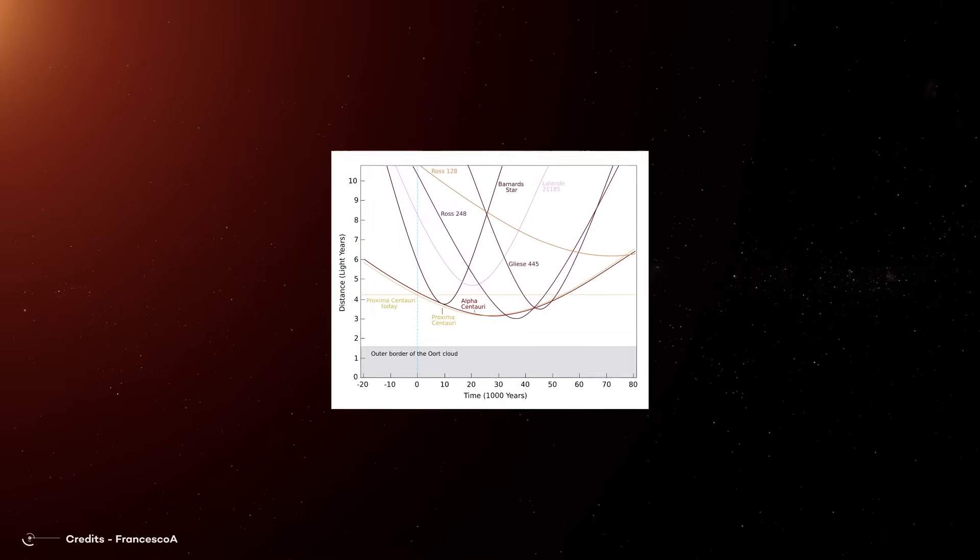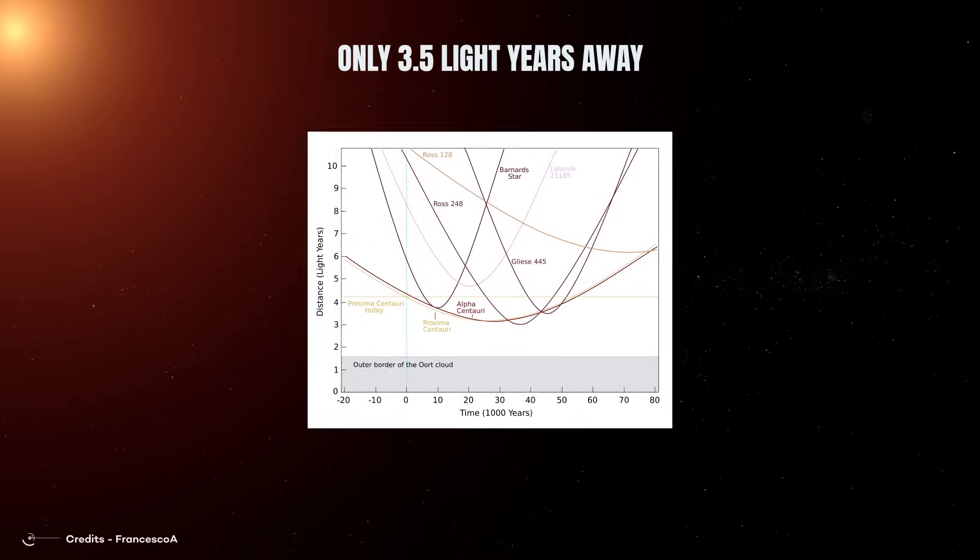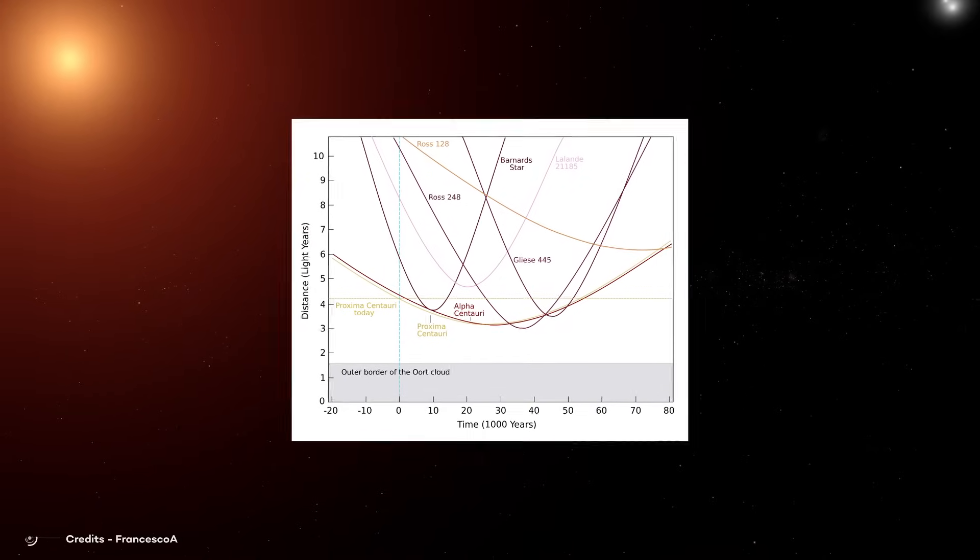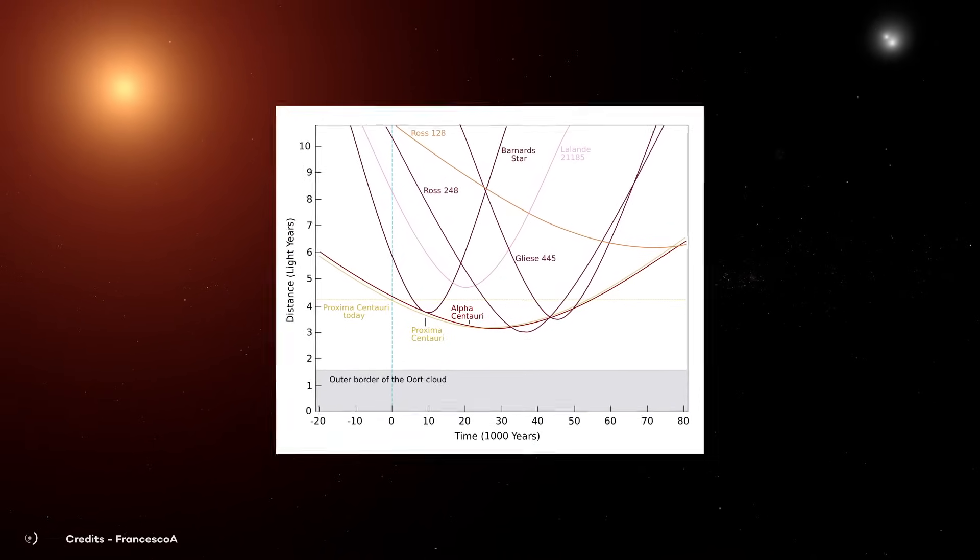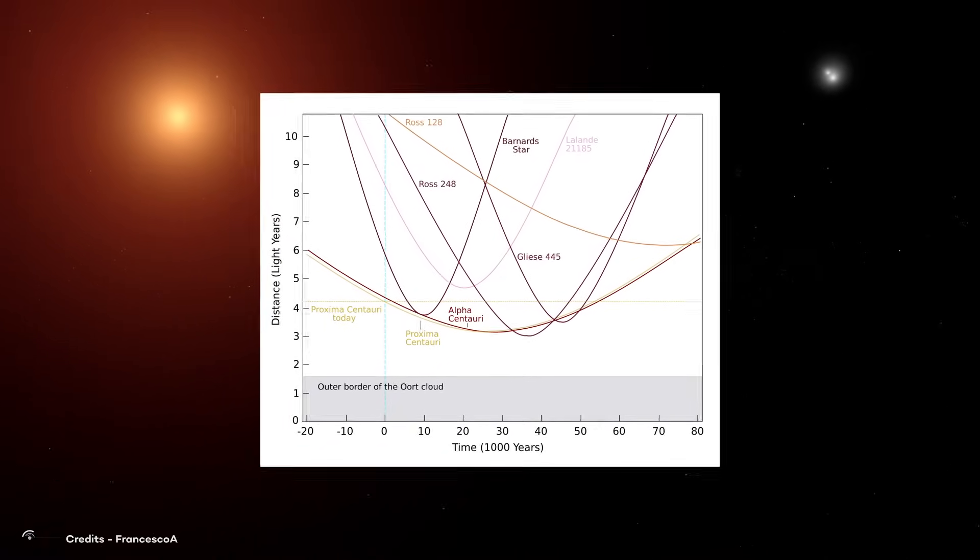In that year, Alpha Centauri and the Sun will be only 3.5 light years away. Although it is still an enormous distance, a trip to this star system from Earth would take less time.